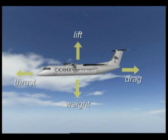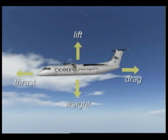For stable steady flight, all four forces — lift, weight, drag and thrust — must pass through the same point and bring about equilibrium.